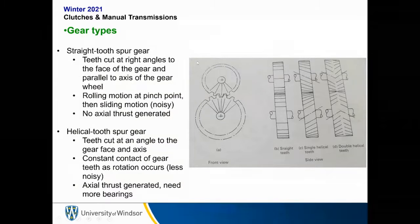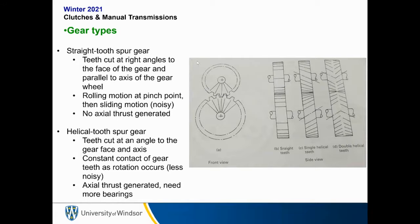What type of gears are used in a manual gearbox? There are two types. Straight tooth spur gears have teeth cut at right angles to the gear face, parallel to the axis. There's a rolling motion at the contact point then a sliding motion — this is noisy and no axial thrust is generated. Helical tooth spur gears have teeth cut at an angle to the gear face, giving constant tooth contact. This is less noisy but generates axial thrust, requiring additional bearings. Helical tooth spur gears are what is actually used in manual transmission gearboxes.